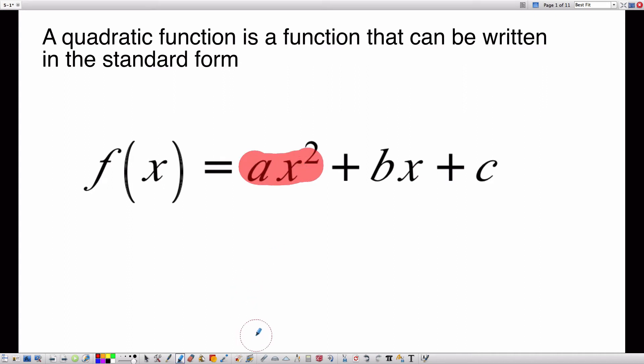This first term is called the quadratic term, and that's because it has x raised to the second power. That makes it quadratic. The second term is called the linear term because it has x raised to the first power, which makes it linear. And then the last term is called the constant term because it doesn't have a variable in it, so it is constant. Any function that can be written in this form with a quadratic term first is a quadratic function.